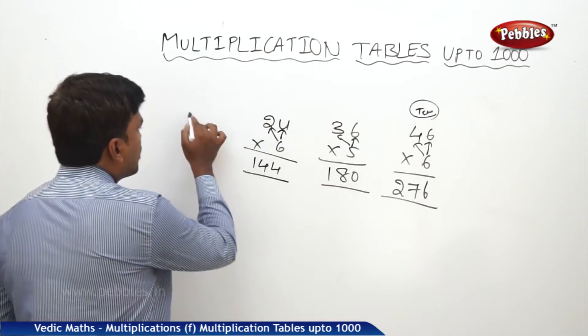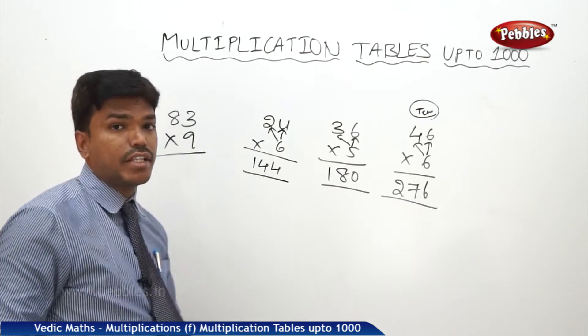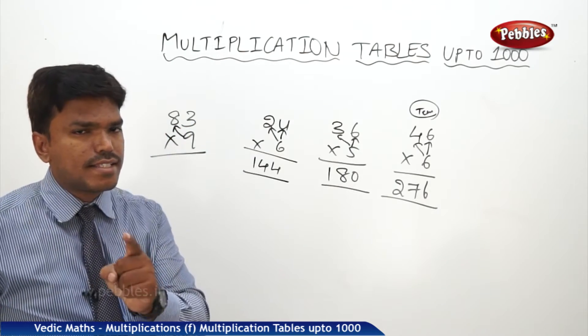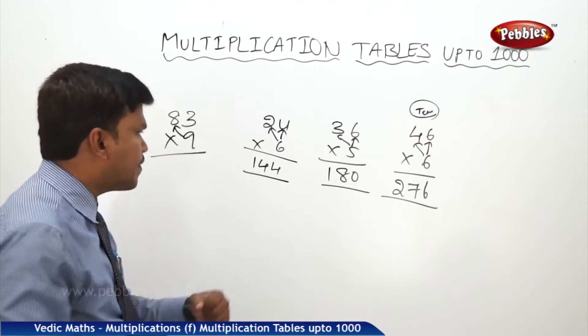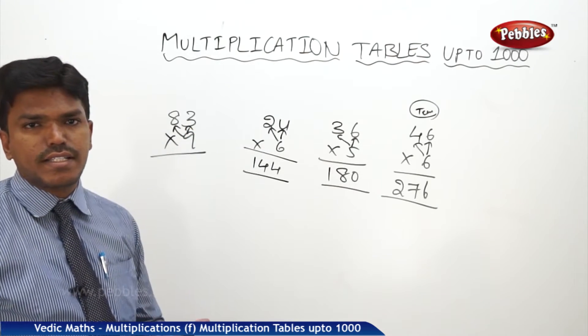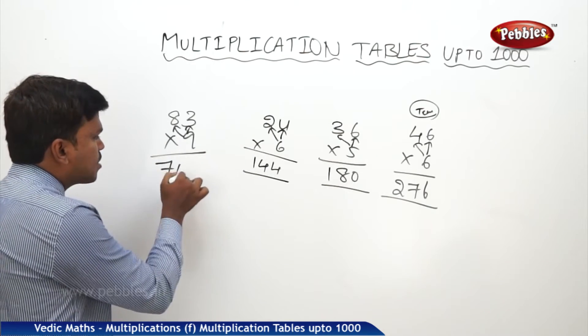Similarly, 83 times 9. What is nine eights? 72, take it as exactly 720. Keep 720 in the mind. 720 plus 27. Nine threes are 27. So 720 plus 27 is 747.